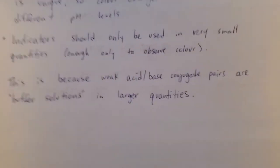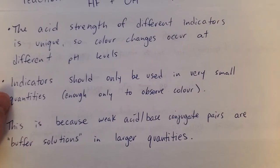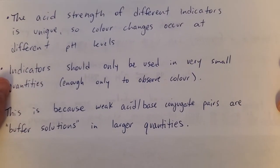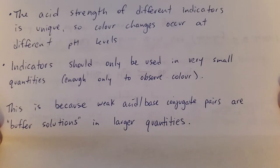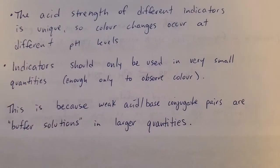Now there are lots of indicators. They're all acid-base pairs, and they all have different strengths. That's why their color changes occur at different pHs. What's important when using an indicator is that you only use a little bit. It's not just to save it. It's because something happens when you have a large amount of a weak acid-base conjugate pair. That's what I'm going to talk about next.